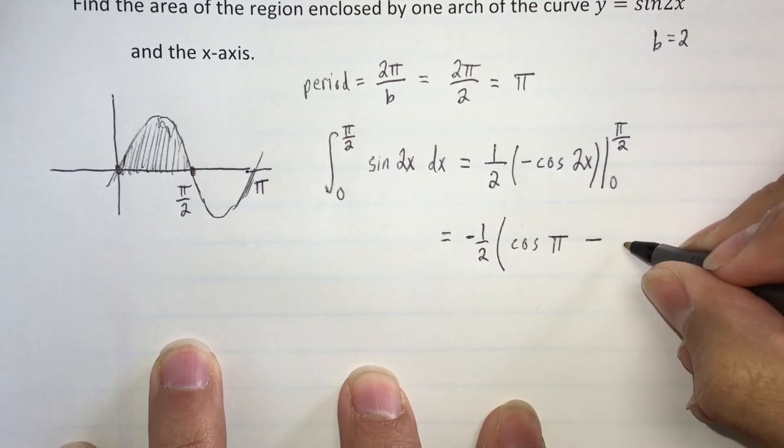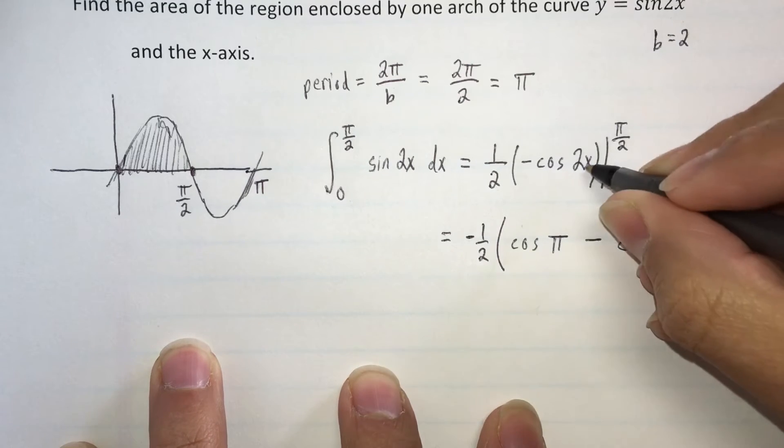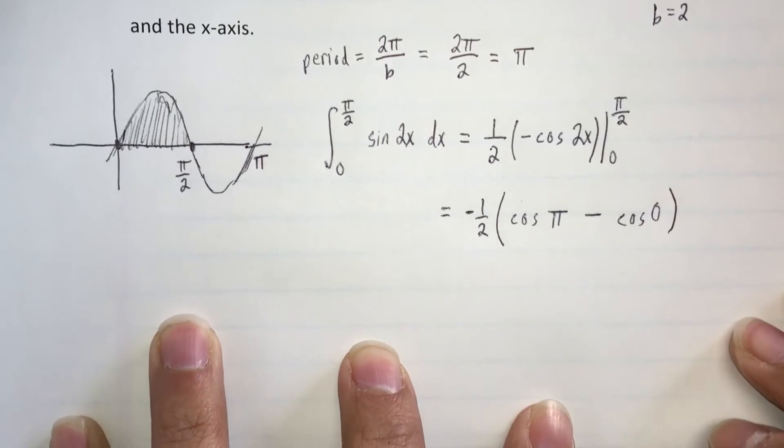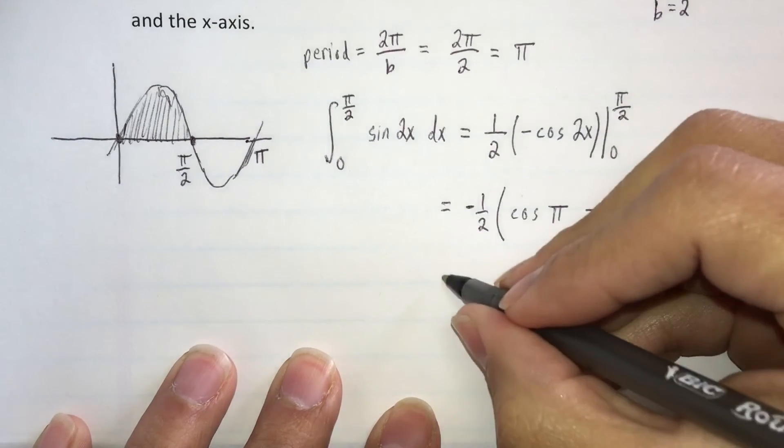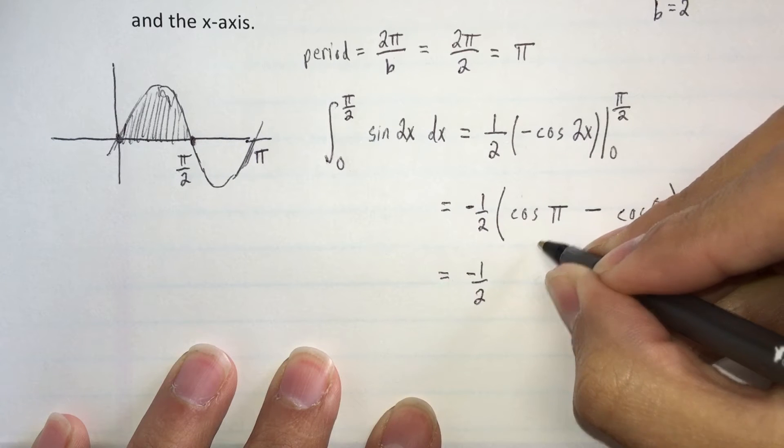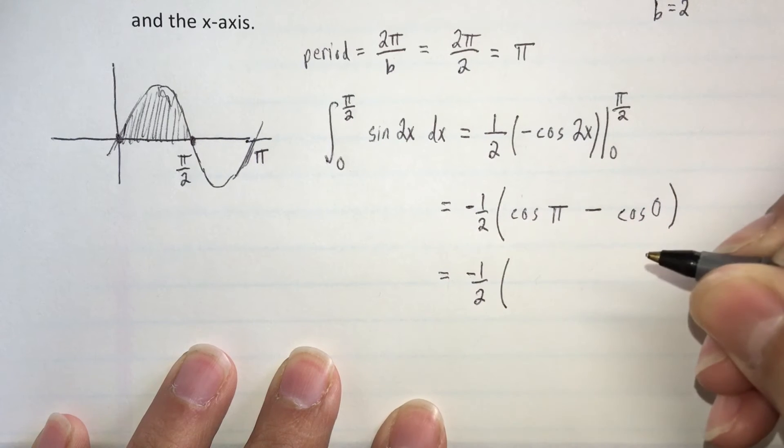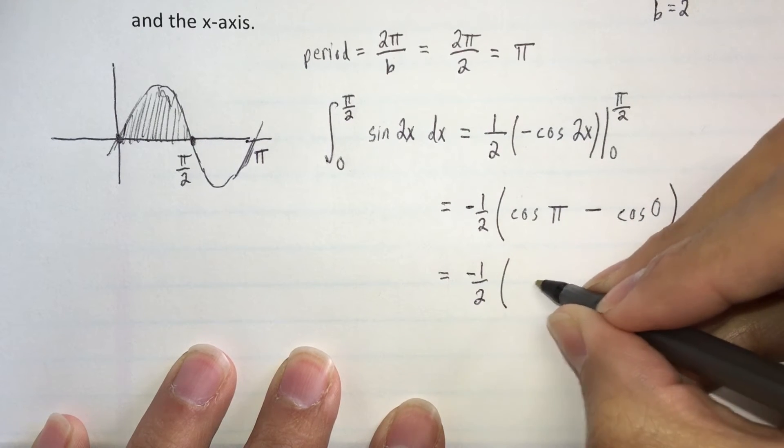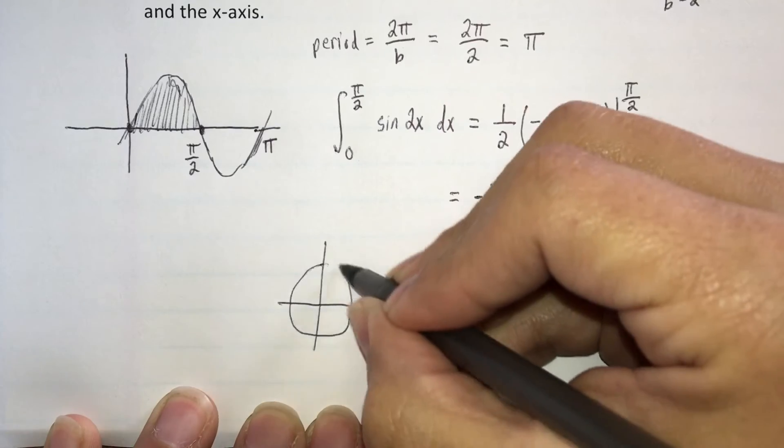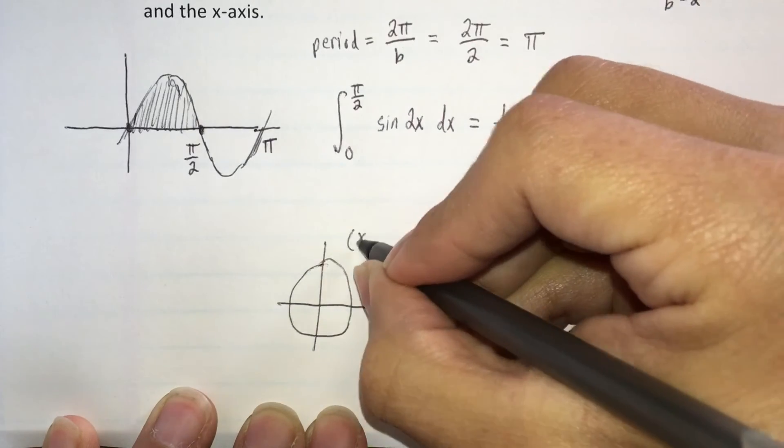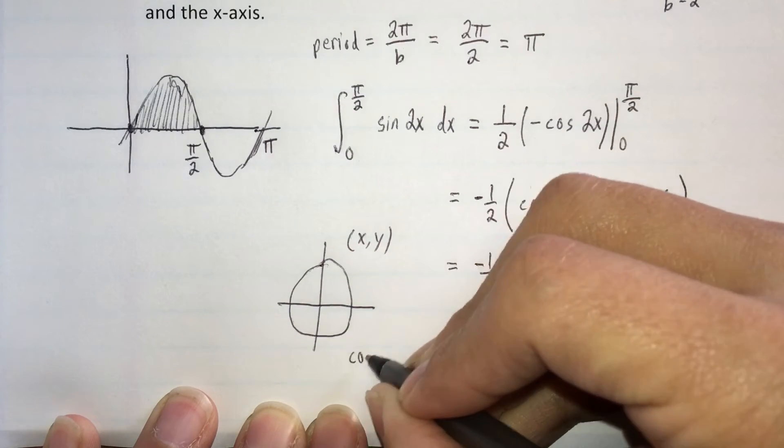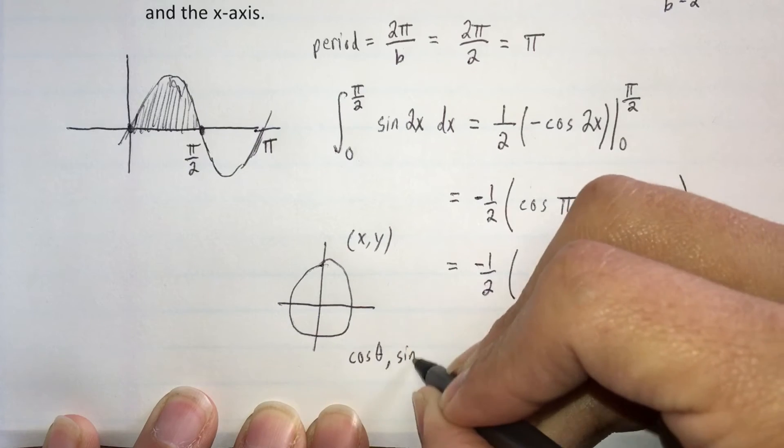Now I have to find the cosine of 2 times π over 2, which would be π, and I have to subtract the cosine of 2 times 0, which is 0. And now some knowledge of the unit circle is required. So we're going to have our negative 1/2, the cosine of π. So let me just real quick draw what that looks like. We have our unit circle, we have x-y coordinates, and every coordinate can also be rewritten as the cosine θ, sine θ.